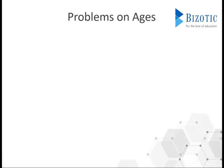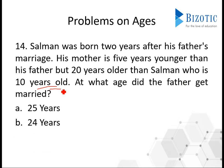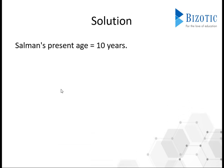Next problem: Salman was born 2 years after his father's marriage. His mother is 5 years younger than his father but 20 years older than Salman, who is 10 years old. Find the father's age at marriage. Let's get into the solution.